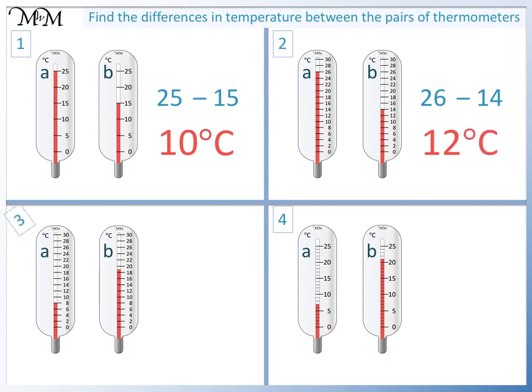Question 3. Thermometer B reads halfway between 18 and 20 degrees, so it must be 19 degrees C. Thermometer A reads 8 degrees C. 19 take away 8 equals 11, so the temperature difference is 11 degrees C.